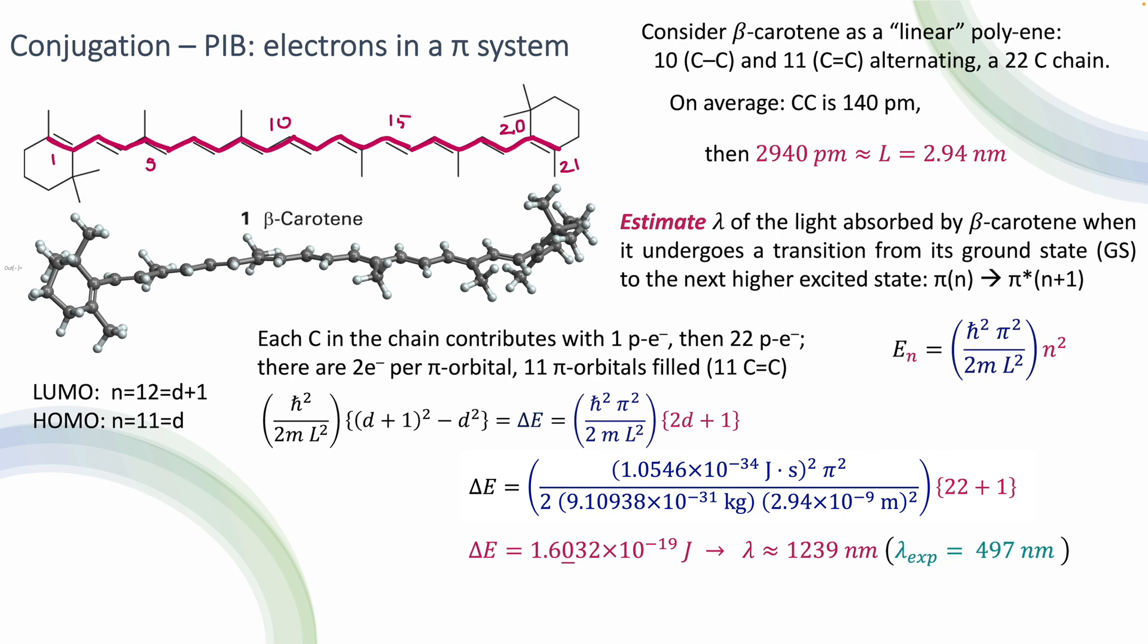Now, again, experimentally, it's known that this transition goes around 500 nanometers. Not great, but it's not too bad either, considering that the model is a huge simplification from the real distribution of electrons in these rather complicated molecules. Anyhow, the model works to a certain extent.